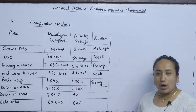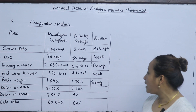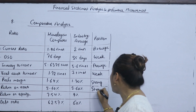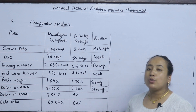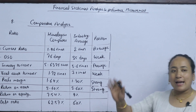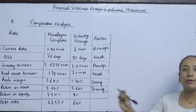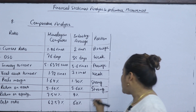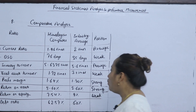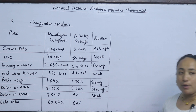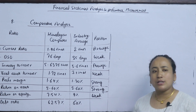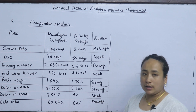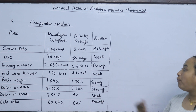Return on assets: the industry average return is higher, indicating a strong position. For return on equity, the industry average is 9%, but our return is 7.54% — since our return is less, we are in a weak position. The debt ratio is 62.57% versus industry average of 60%, so we can consider this a normal position.